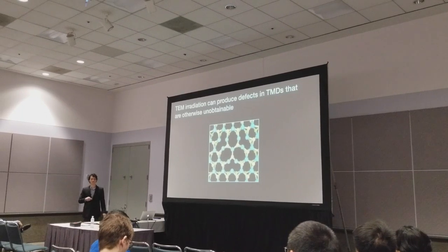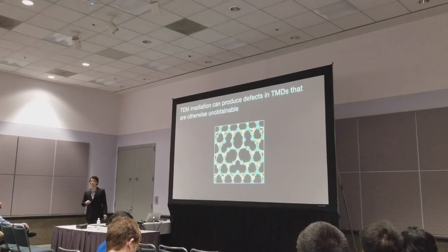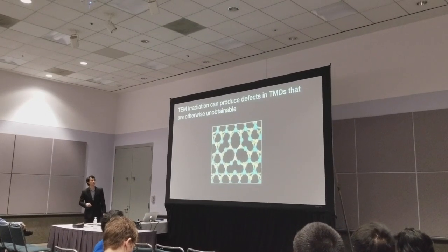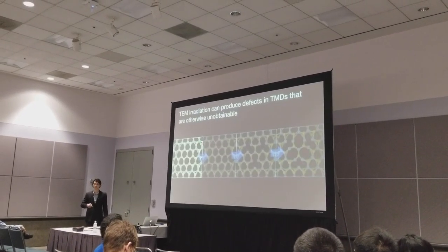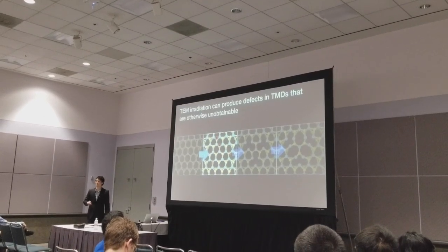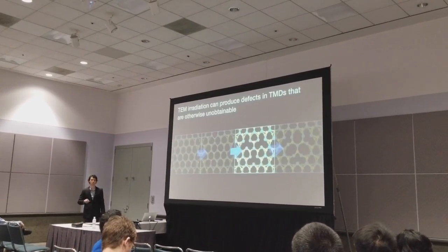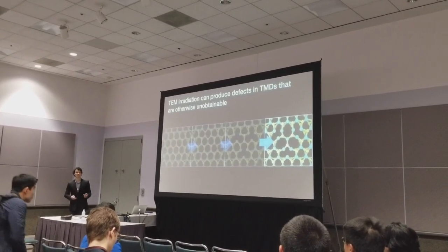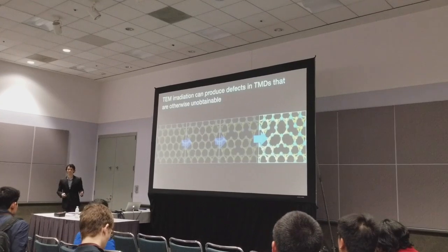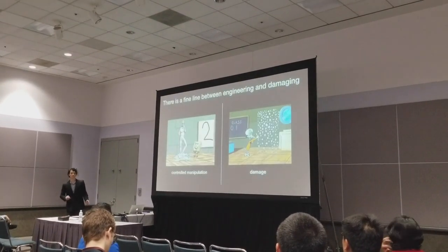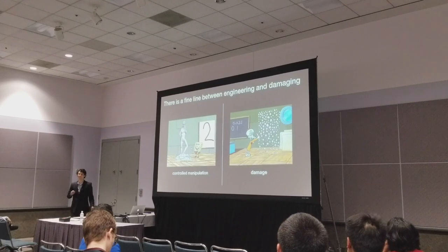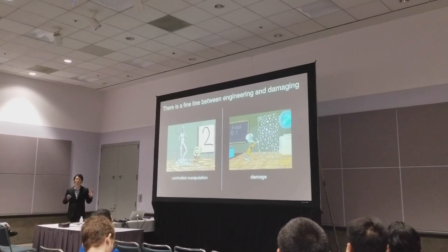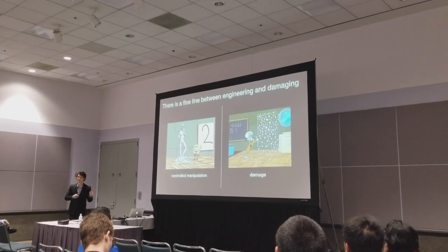Shown here is a rotational defect found in WSe2 that has only been observed under TEM irradiation. The defect arises through a sequence of atomic displacement processes, and skilled researchers have figured out how to use such processes to produce a rich family of point defects, line defects, and even phase transitions. But there's a fine line between controlled manipulation and damage, and it's our goal to figure out exactly what separates the helpful from the detrimental.